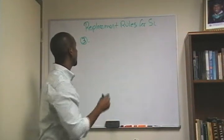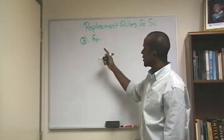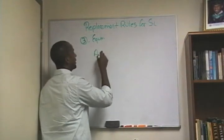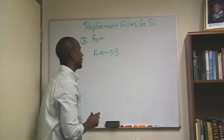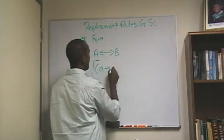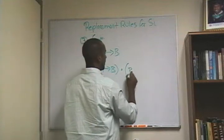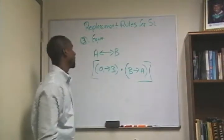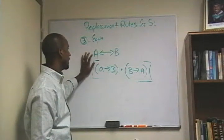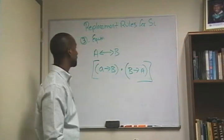The next rule is equivalence, abbreviated EQU or EQIB. It says: if I have A if and only if B, I can transform this into the following — if A then B, and if B then A. So I can take A if and only if B and transform it into if A then B and if B then A. That's equivalence.